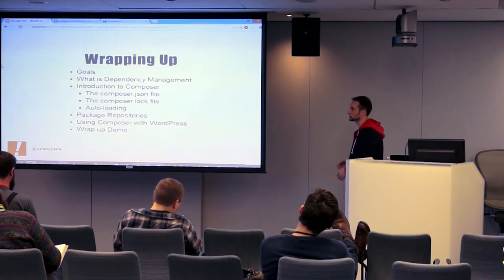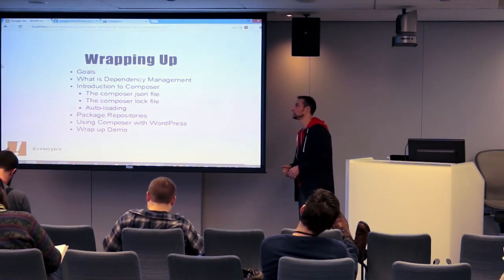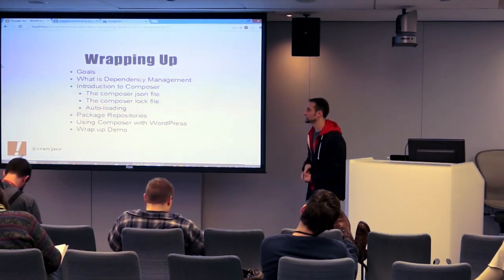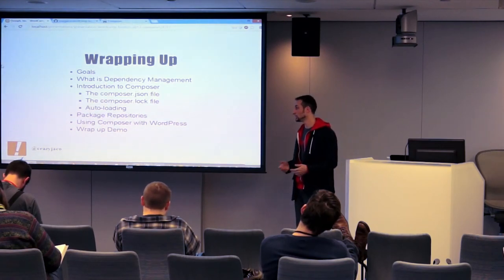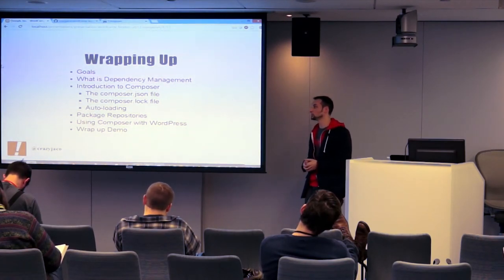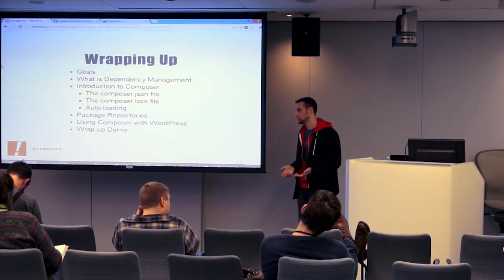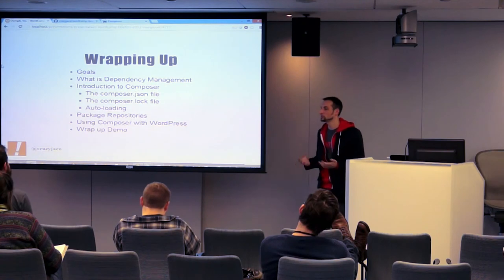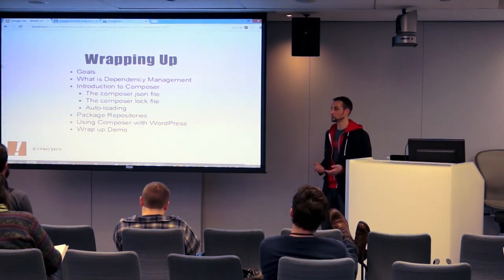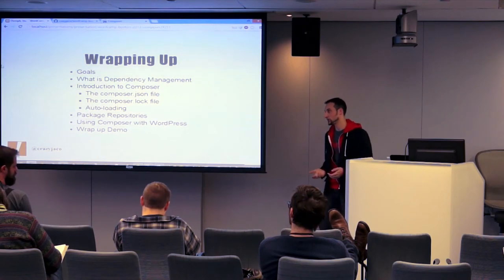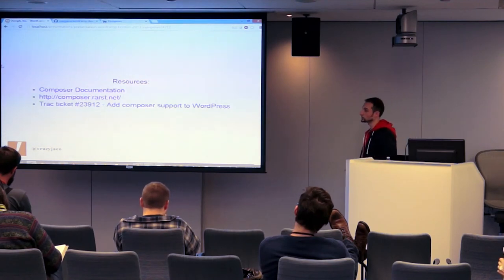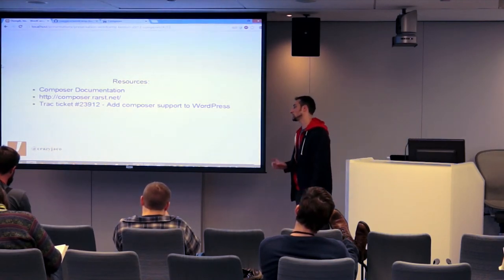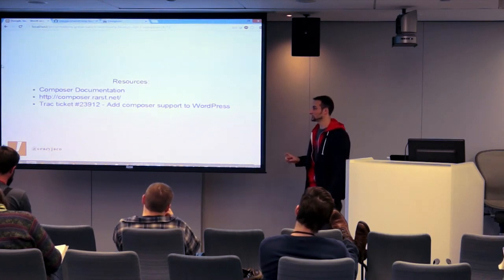We kind of met our goal — getting the WordPress skeleton generated. We talked about what dependency management was, the major parts of Composer — the JSON file, the lock file, autoloading in general — package repositories including packagist.org, and using Composer with WordPress in the form of WPackagist and custom installers, and we did the final demo. For resources, check out the Composer documentation at getcomposer.org — if you can bear with the terrible navigation, the documentation is excellent. Also check out composer.rarst.net by Andrei Savchenko — he has some great documentation and sample composer.json files, and he's probably one of the most experienced people in the WordPress community with Composer.